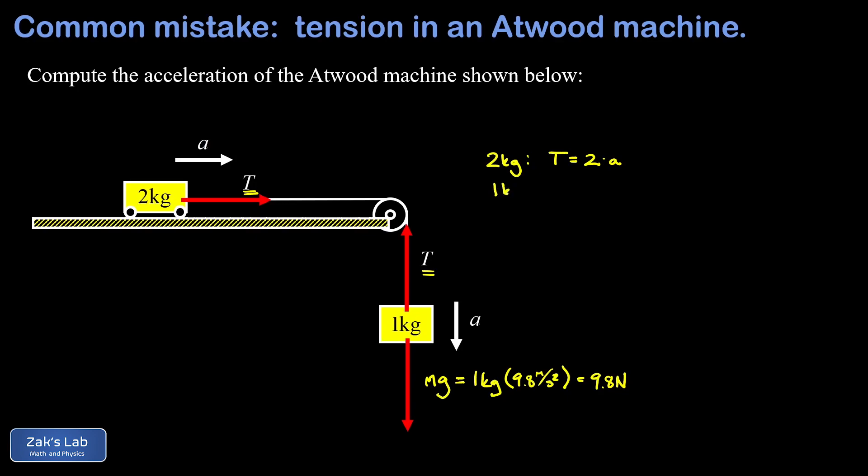We do a similar thing for the one kilogram mass. And we're going to call downward positive for that piece of the system because we want A to stand for a positive acceleration on both of these objects. And so we call the 9.8 Newtons pointing downward. We call that positive.